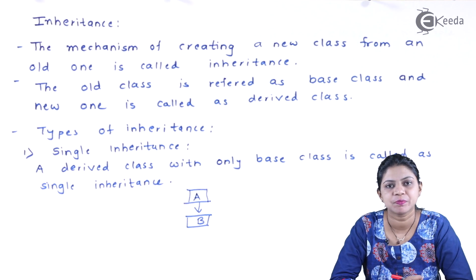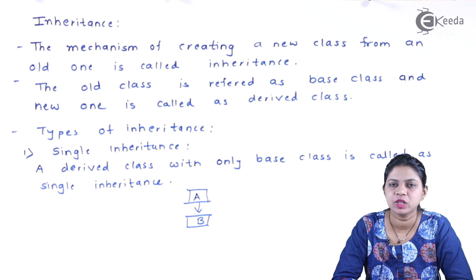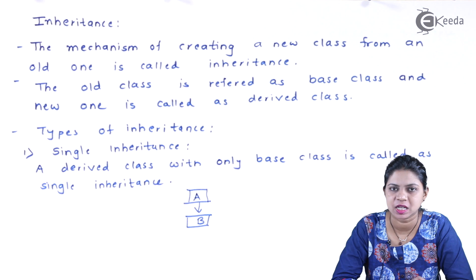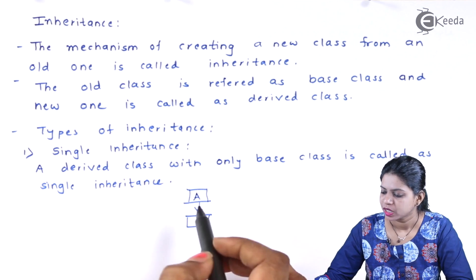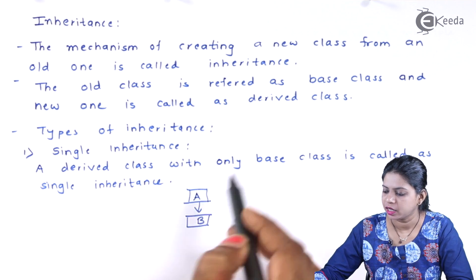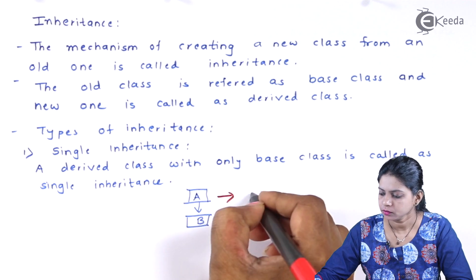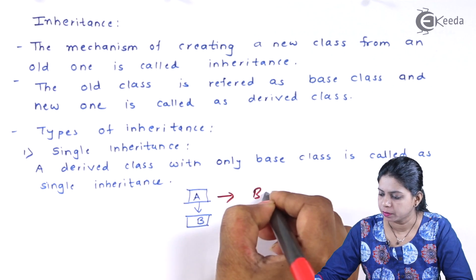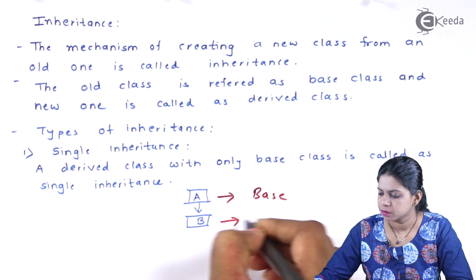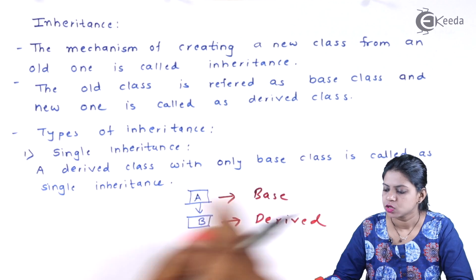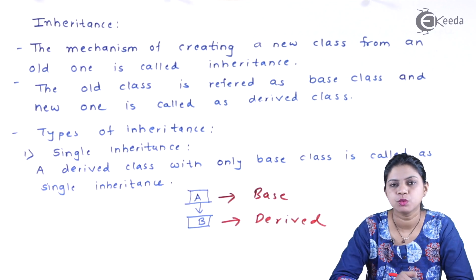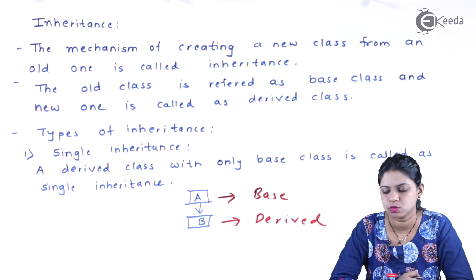Number one is called single inheritance. A derived class with a single base class is called single inheritance. For example, A is my base class and B is my derived class. A derived class with only one base class is called single inheritance.